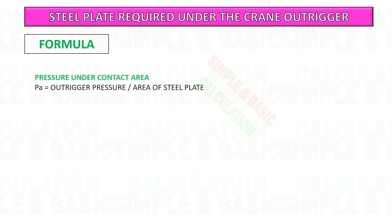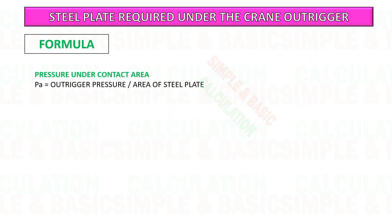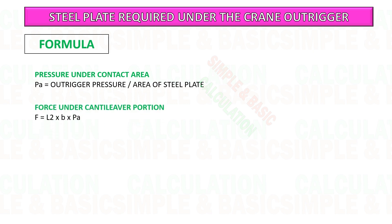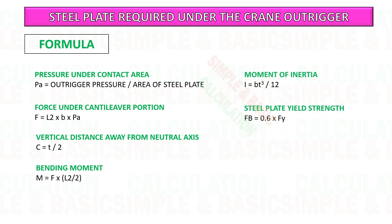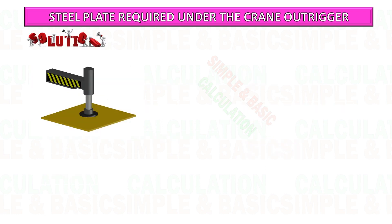This is the list of formulas we will use for checking the steel plate bending stress. Based on the outrigger force and recommended size of steel plate, we need to make sure that the steel plate size we recommended is able to withstand the pressure and able to spread the force on the ground.